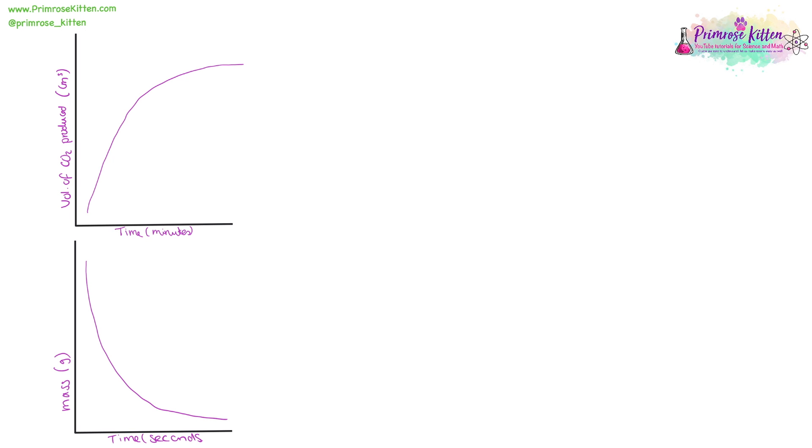When we are measuring the rate of reaction, we need to look carefully at the units used. For example, here we have volume in centimeters cubed over time in minutes, so it would be centimeters cubed per minute. And in the second one, we have time in seconds and mass in grams, so this would be grams per second. In the first graph, it is volume of carbon dioxide being produced, so you can see that is going up. And in the second graph, it is mass being lost, so you can see that is going down.